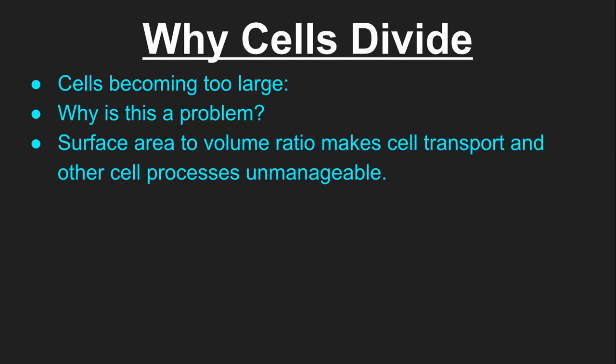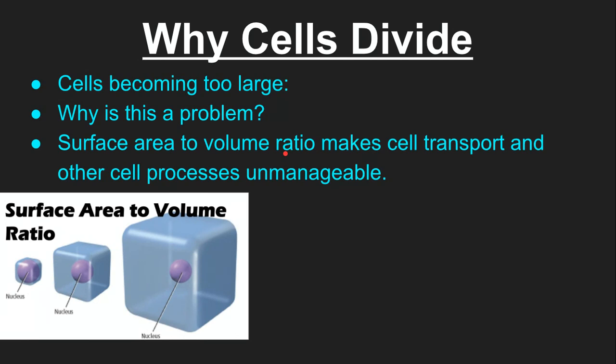If the cell gets a little bit too big, these processes of cell transport start to become unmanageable. The reason for this is something called a surface area to volume ratio. To give you a visual to kind of drive this one, if we take a look at a cell getting bigger, the nucleus will stay the same size, yet the volume on the inside of the cell gets larger and larger as we go.